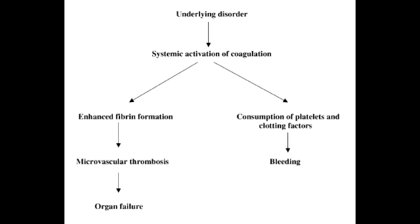The mnemonic to help you remember DIC is 'Stop Making New Thrombi.' S is for sepsis, T is for trauma, O is for obstetric complications, P is for acute pancreatitis, Making is for malignancy, N-U is for nephrotic syndrome, and Thrombi is for transfusion. So that's Stop Making New Thrombi.